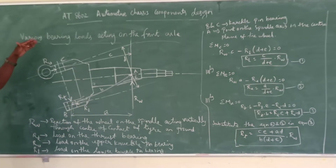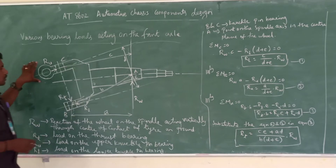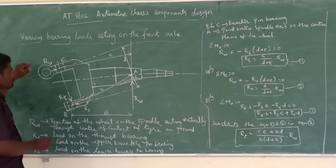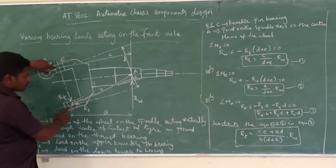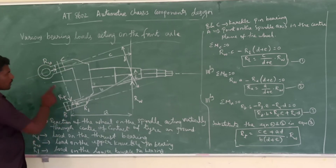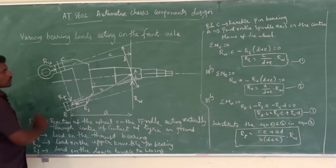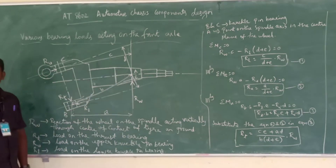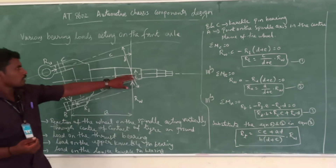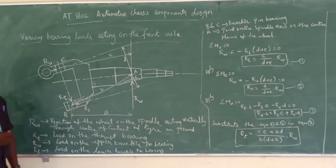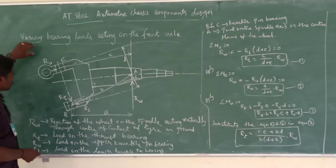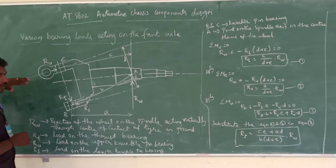This is a bearing section. This is the front axle system. These are the bearings — this is a lower bearing and this is an upper bearing. Lower bearing is point B, upper bearing is point C. This is point A on the spindle axis, at the center plane of the wheel.